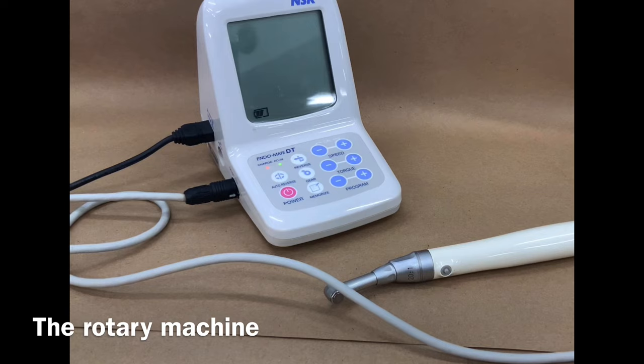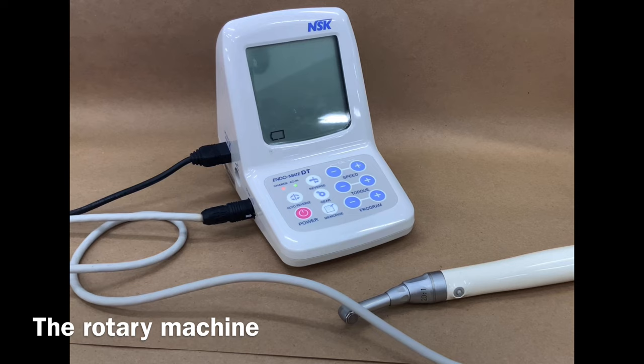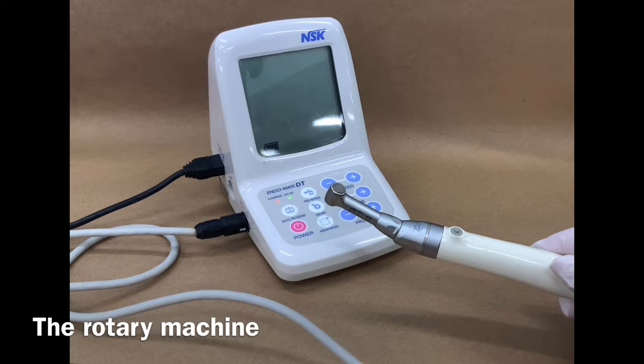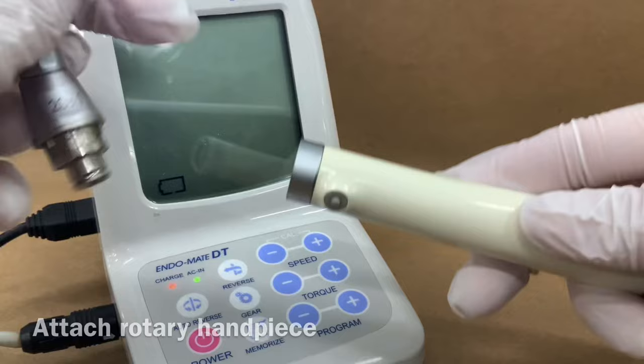This is the rotary machine that you will be using in both pre-clinic and clinic. It has two cords: one is a power cord, the other is a cord that attaches to the handpiece. Notice that there is no rheostat. Instead, there is a push button on the handle which starts and stops the rotary file.